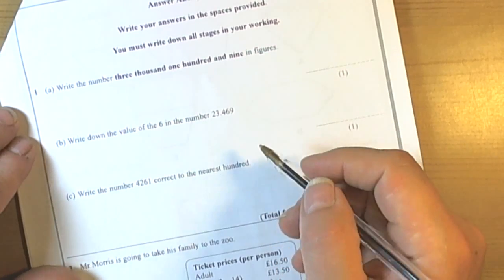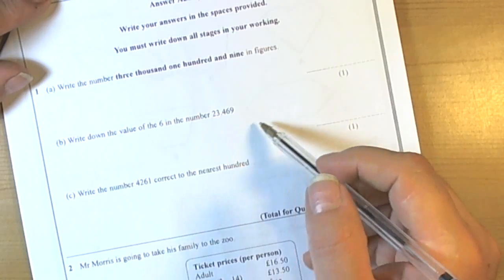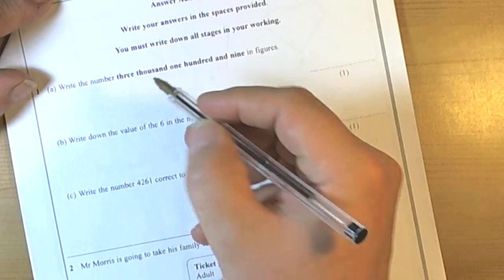On this question we need to look at place value in numbers and rounding. So write the number 3109 in figures.